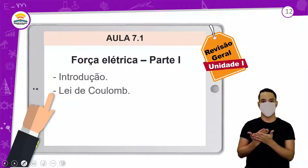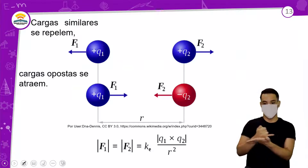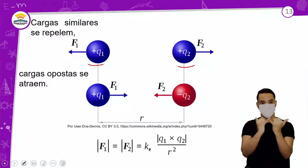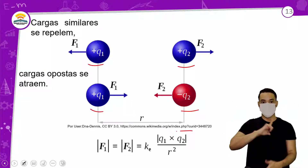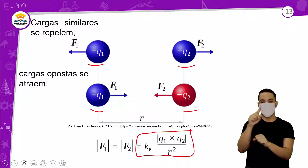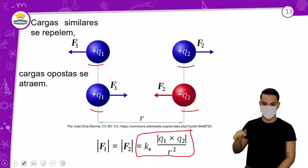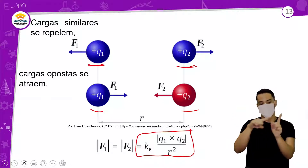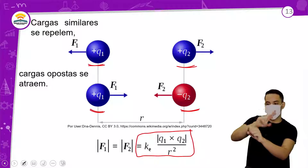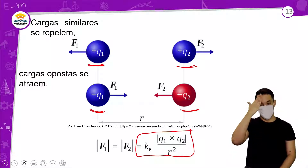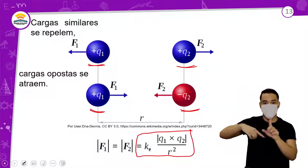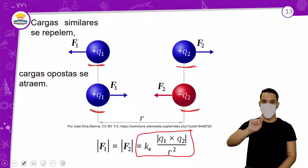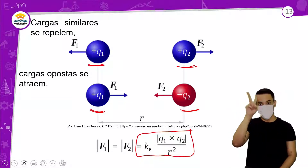Aula 7.1, força elétrica parte 2: introdução e a lei de Coulomb. Cargas similares se repelem e de sinais contrários se atraem. A equação tem uma constante eletrostática K, Q1 vezes Q2 em módulo — não uso o sinal, o sinal só serve para saber se está repelindo ou atraindo vetorialmente — dividido por R ao quadrado, a distância ao quadrado. A força é inversamente proporcional ao quadrado da distância.